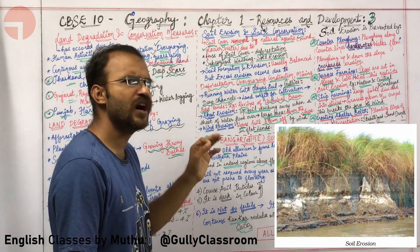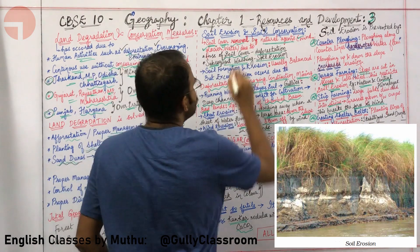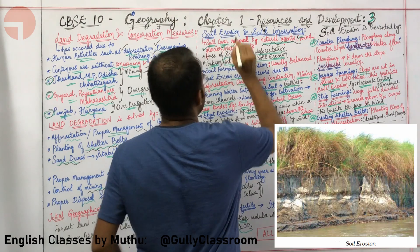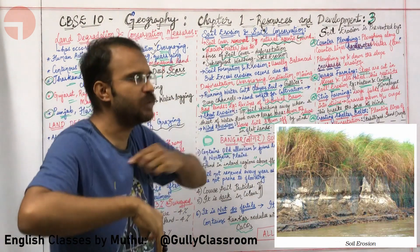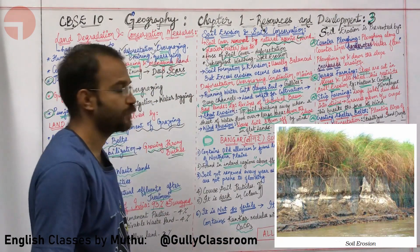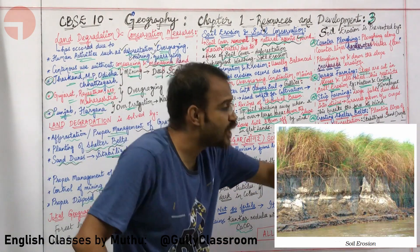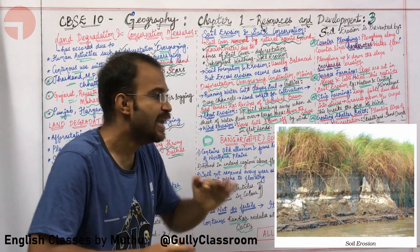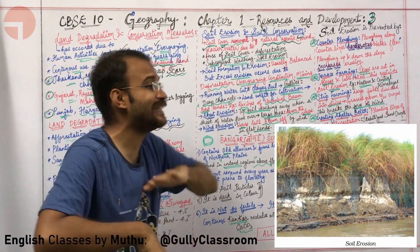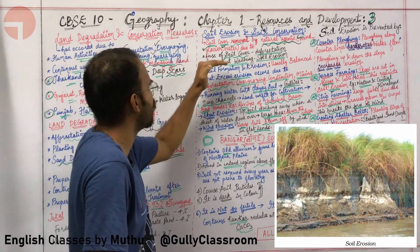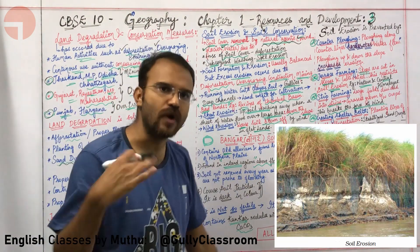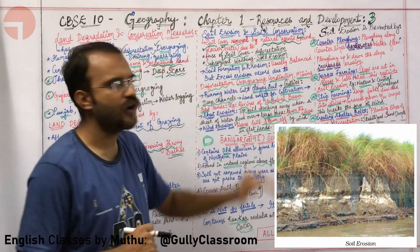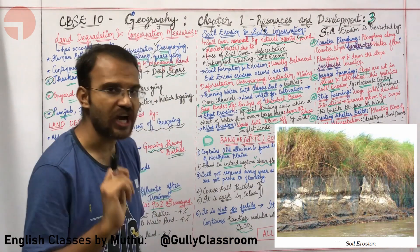Now let us look at soil erosion. Soil erosion is the removal of soil cover by natural agents like wind, glacier and water. This happens due to loss of soil cover caused by deforestation and over-grazing, where grasses and trees that protect the topsoil are lost. After loss of soil cover, rain washes away the soil, resulting in soil erosion.